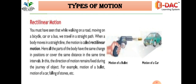We are going straight in a straight line — that is rectilinear motion. Here all the parts of our body cover the same distance in the same time interval. The direction of motion remains fixed during the journey of the object. For example: motion of a bullet, motion of a car, falling of a stone, etc.